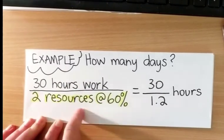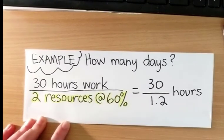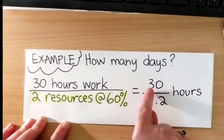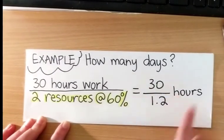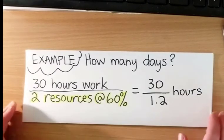We are allocating two resources, probably people, at 60% of their workday. So that is 30 divided by 1.2, and that will give us a number of hours. But the question didn't ask for hours. It asked for days, and we're assuming workdays.